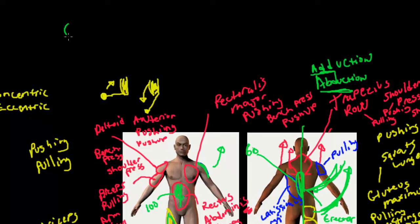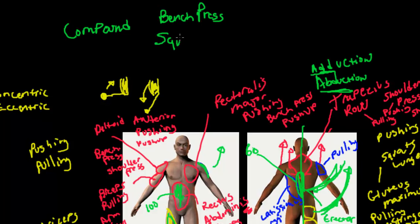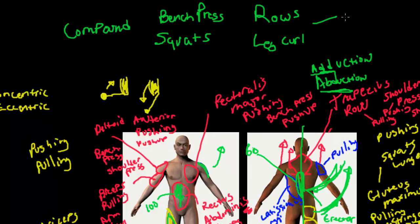The last thing to cover is compound lifts — doing compound movements that work multiple muscle groups. If you do these four activities: bench press or push-ups, squats or leg press, rows, and some sort of leg curl — that trains almost every major muscle group in your body, improves your metabolism, burns more calories at rest and when active. If you're short on time, hit these four with three sets each.